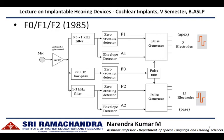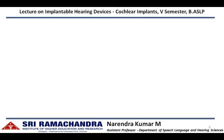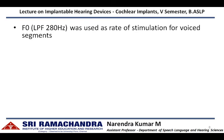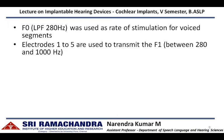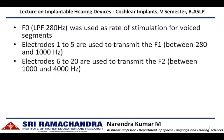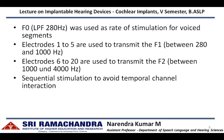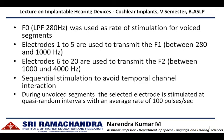The F0-F1-F2 strategy activates two electrode contact regions within the cochlea at any given time — one electrode for F1 and another for F2 — and they fire in a non-simultaneous fashion. The fundamental frequency is extracted from a 280 Hz low-pass filter. Electrodes 1 to 5 transmit first formant information varying between 280 to 1000 Hz, and electrodes 6 to 20 transmit second formant information between 1000 to 4000 Hz. Sequential stimulation is employed to avoid temporal channel interaction. During unvoiced segments, the selected electrodes are stimulated at a quasi-random period with an average rate of 100 pulses per second.